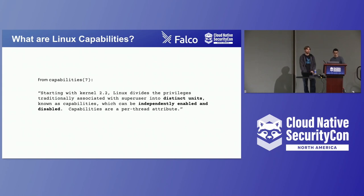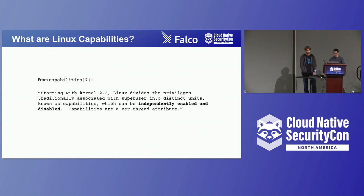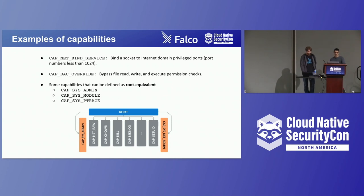To improve its security model, Linux implemented capabilities. Capabilities are a clear example of applying the principle of least privilege. As the manual states, the power of the superuser is split into distinct units that can be independently granted or revoked. This allows us to run processes with the minimal set of privileges they need. The classic example is a web server: before capabilities, a web server needed to run as root only because it had to open a privileged port — below 1024. With capabilities, we can map that specific privilege to CAP_NET_BIND_SERVICE.